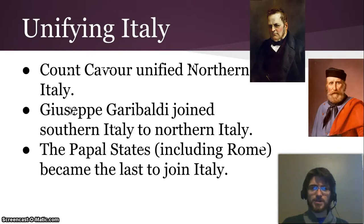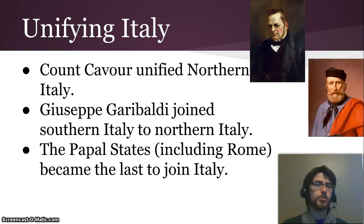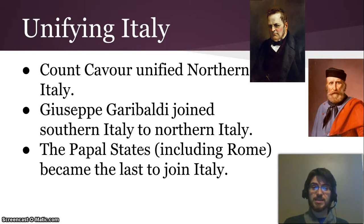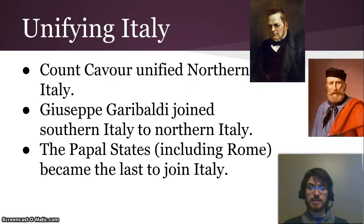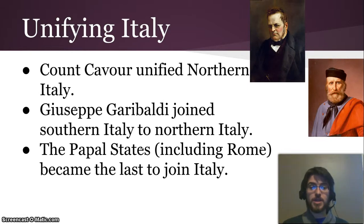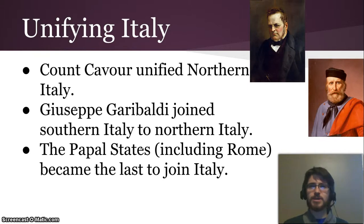Italy had a different experience. They had been a bunch of little tiny countries for a very long time — either small countries, city-states, or under the control of other European nations. Then there were some bubblings up of nationalist feeling, channeled by Count Cavour, who united northern Italy, and also Giuseppe Garibaldi, who basically conquered southern Italy and joined it to Cavour's northern Italy. And then finally the Papal States, which is where the Pope lived and had control — including Rome — joined up with Italy. Count Cavour did not live to see that happen, and he was the architect, the mastermind behind a lot of this Italian unification.